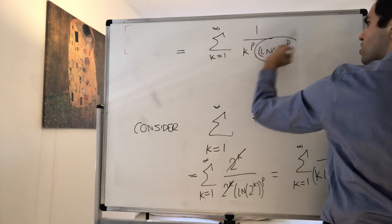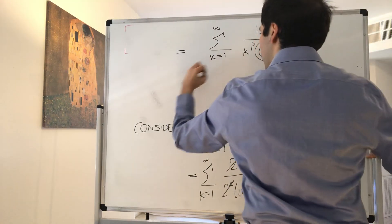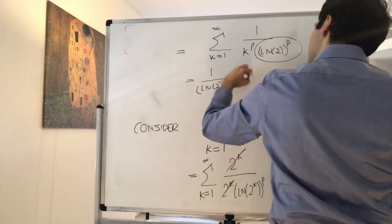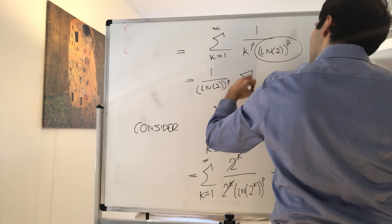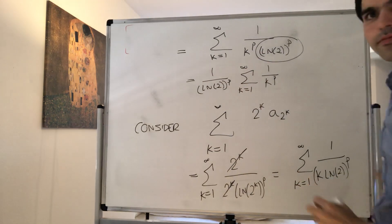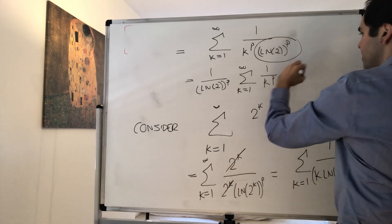But this thing is just a constant, so it comes out, so it's 1 over ln(2)^p times the sum from k equals 1 to infinity of 1 over k^p. But look, this is just a p-series.